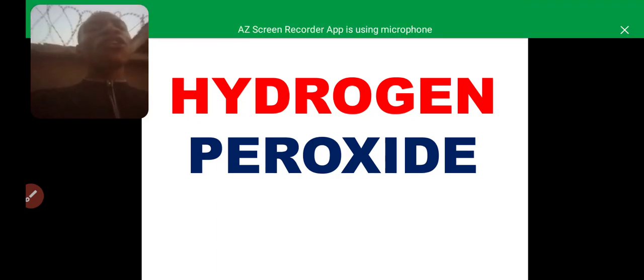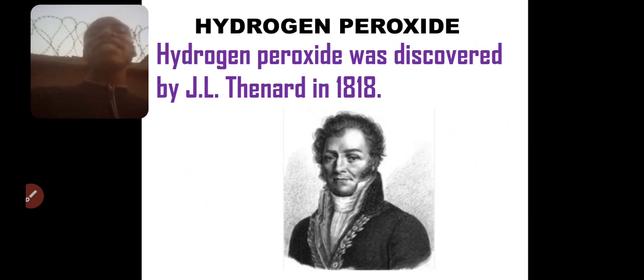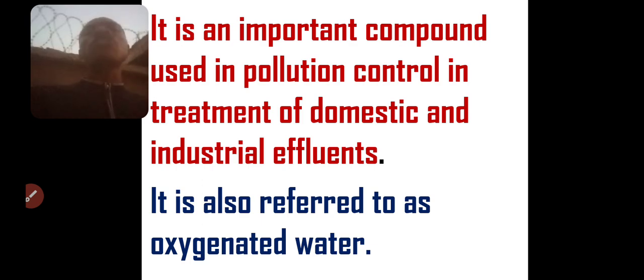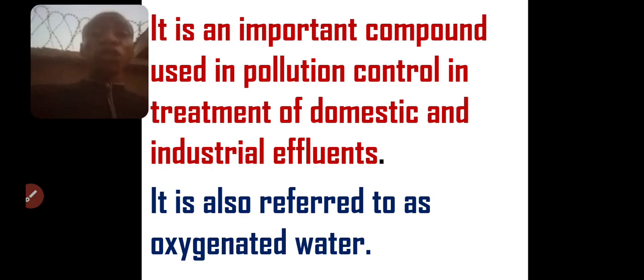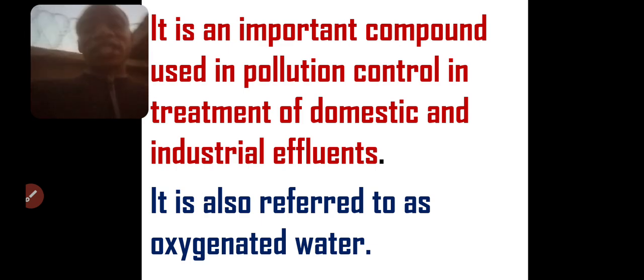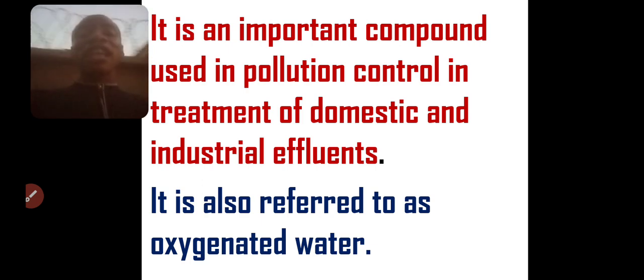In this video we'll be looking at hydrogen peroxide. It was discovered by J.L. Thenard in the year 1818. He saw that this compound was normally used in controlling pollution and for treating industrial and domestic waste, so he referred to this compound as oxygenated water, since the compound has one more oxygen than normal water.